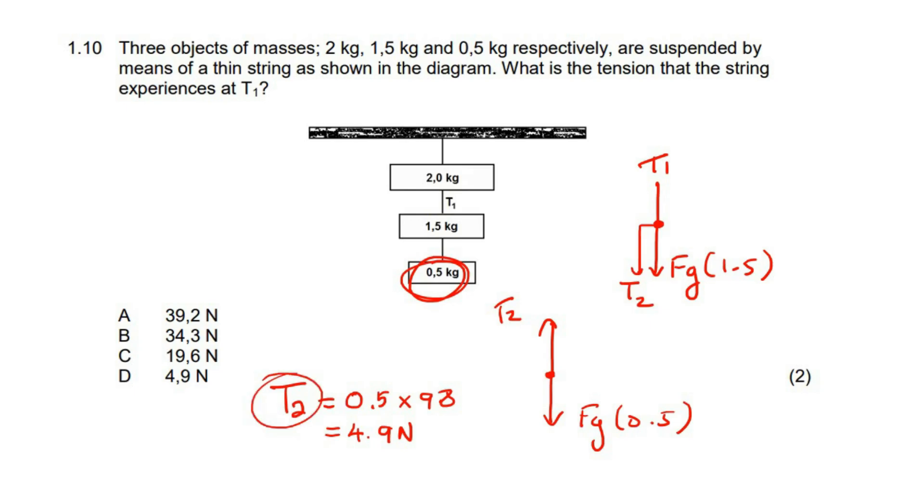Now we have T2, so we can use it over here, because it's the same piece of rope, and the tension in a rope never changes, as long as it's the same piece of rope. So now we know that these two forces acting down have to be the same as this force acting up, because otherwise the system is not balanced.